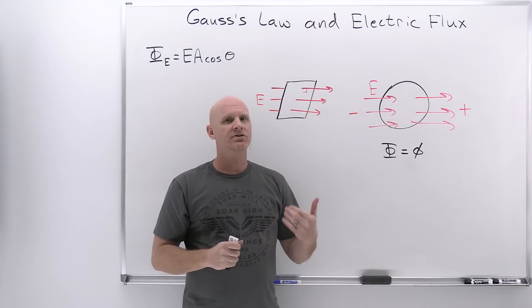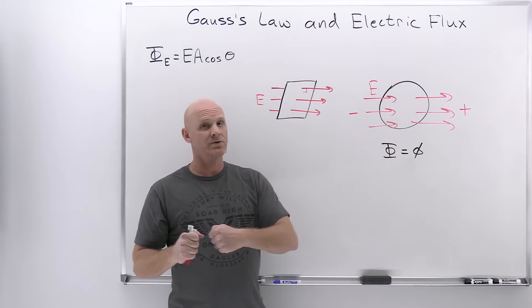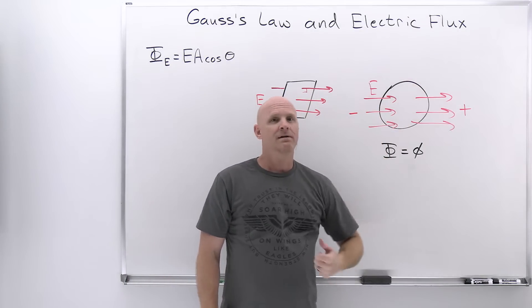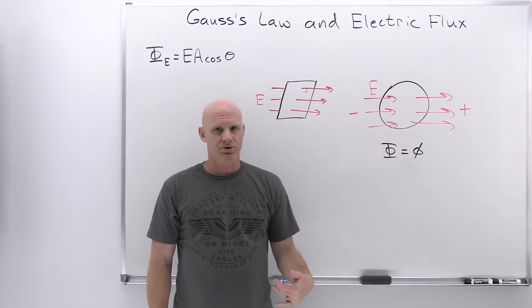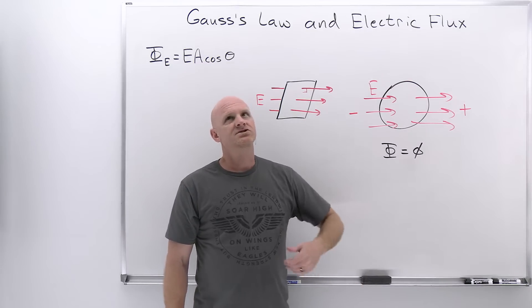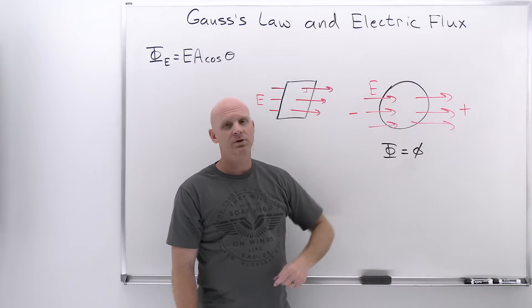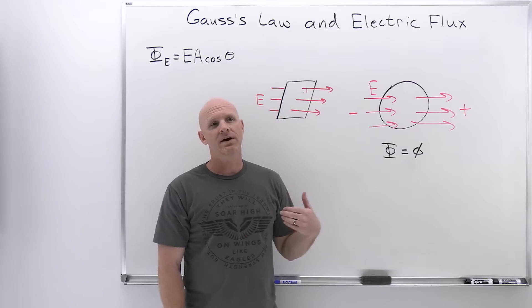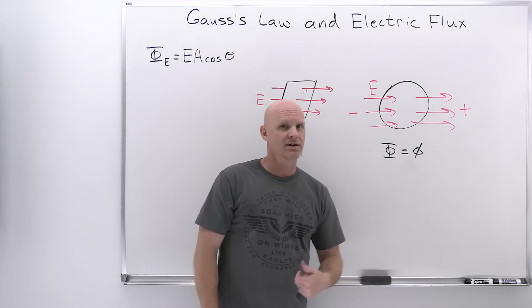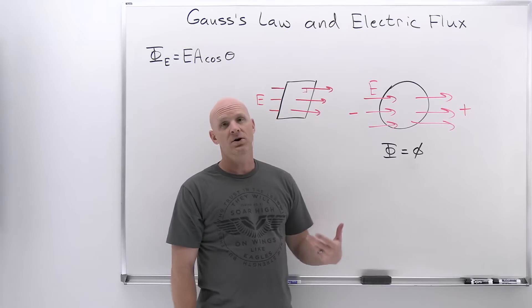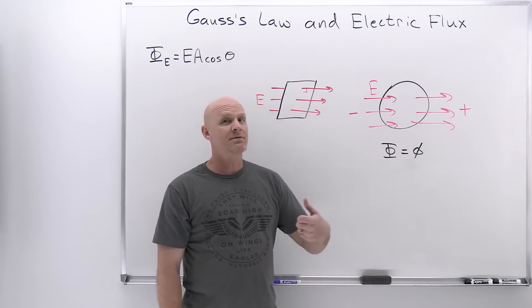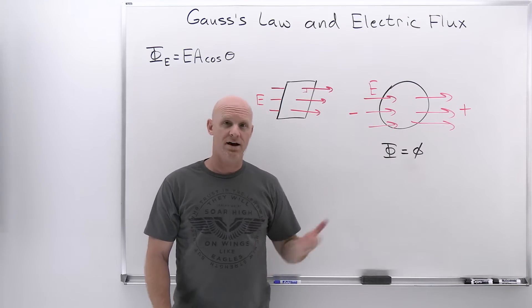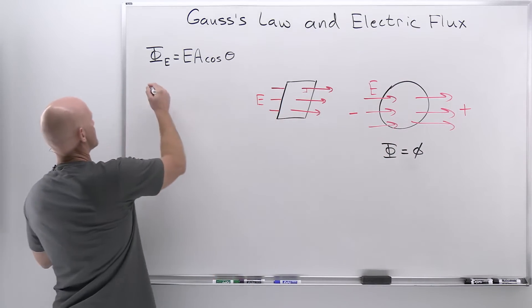With an external electric field, every field line that enters the sphere should also be exiting. The only way this would not be true is if there were some source of electric field lines inside the sphere — either originating or terminating there — so that not every line that entered would be exiting. That only happens if there is some charge inside the enclosed surface, which is exactly what Gauss's Law addresses.